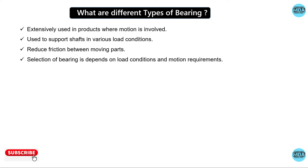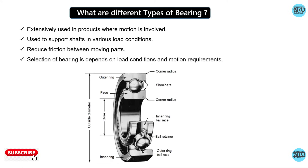The selection of the bearing depends upon the load condition and the motion requirement. The components of the bearing are: seal, outer ring, inner ring, rolling element, and cage.